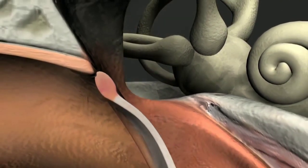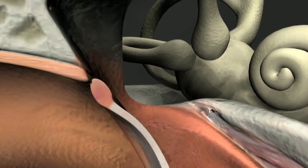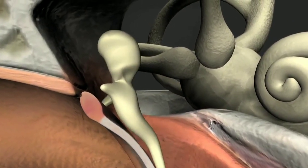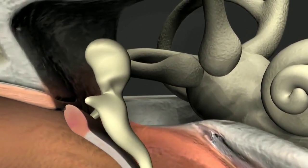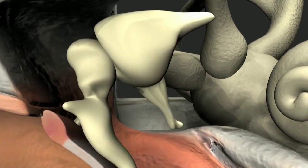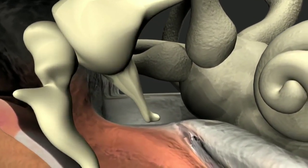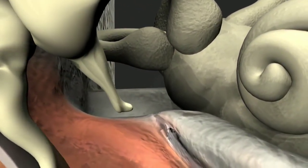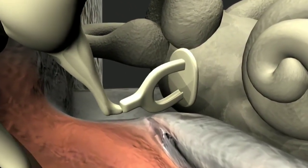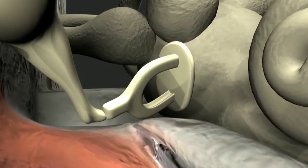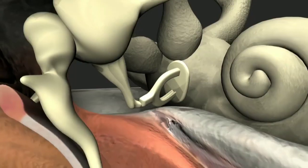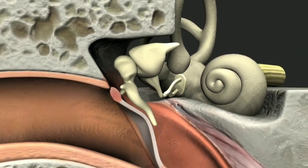The tympanic membrane vibrates in response to sound. The eardrum moves the malleus, which in turn moves the incus, and then the stapes. The footplate of the stapes moves in and out of the oval window and transfers the energy to the endolymph fluid in the cochlea.